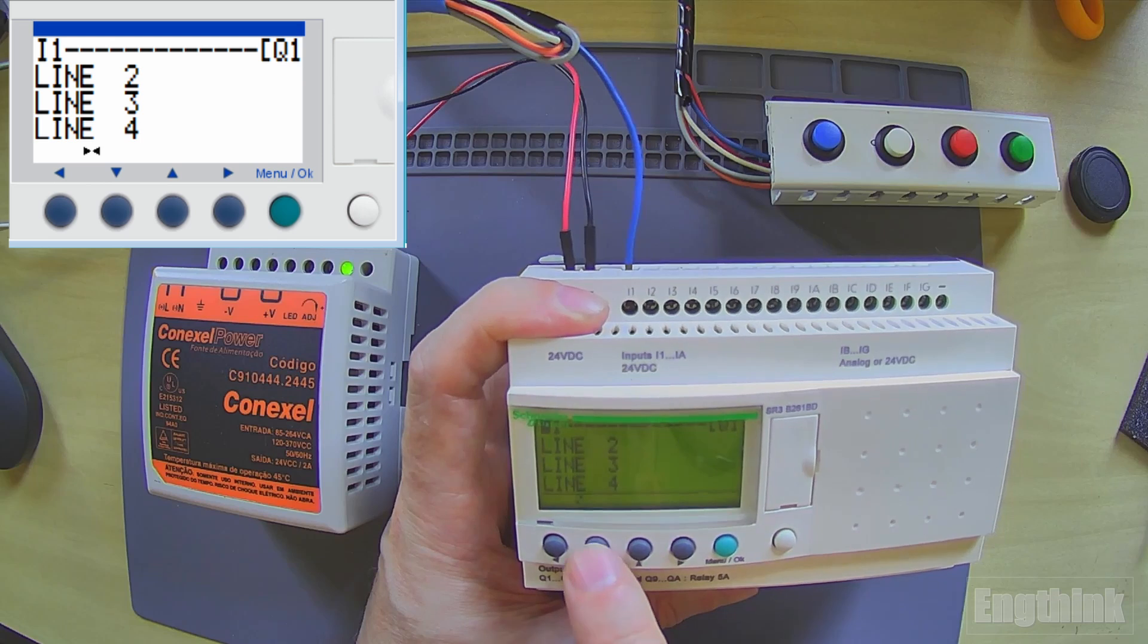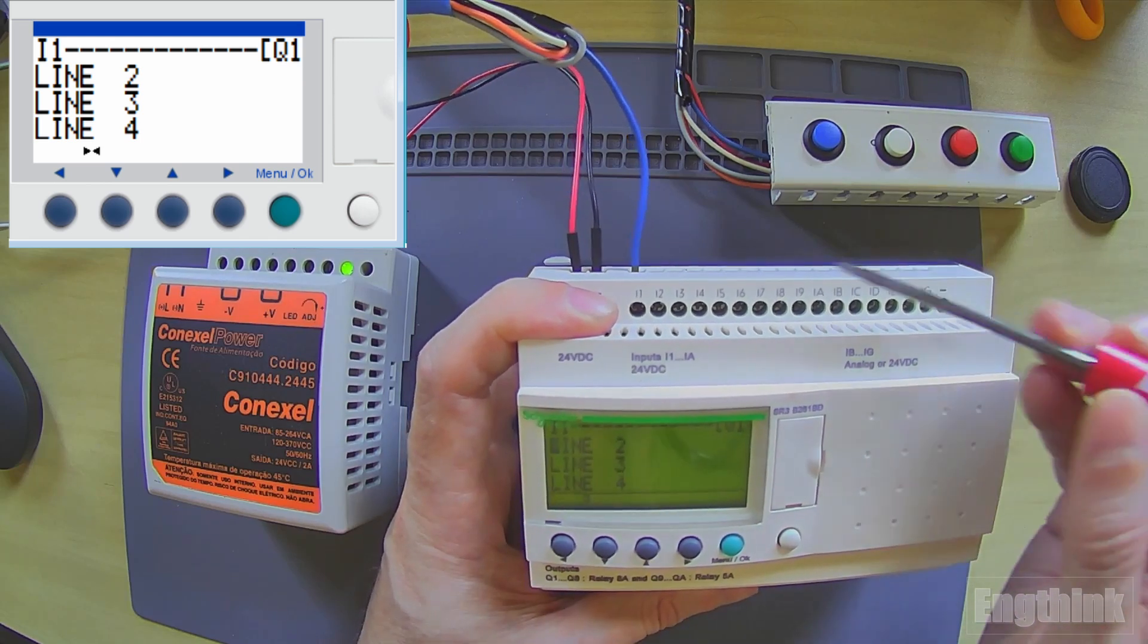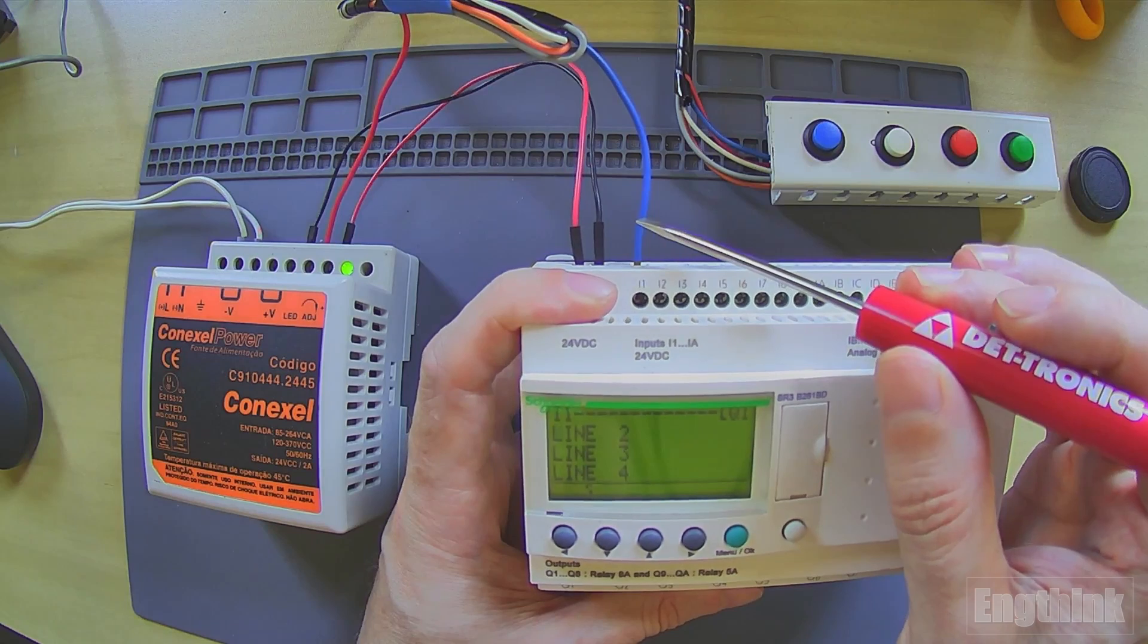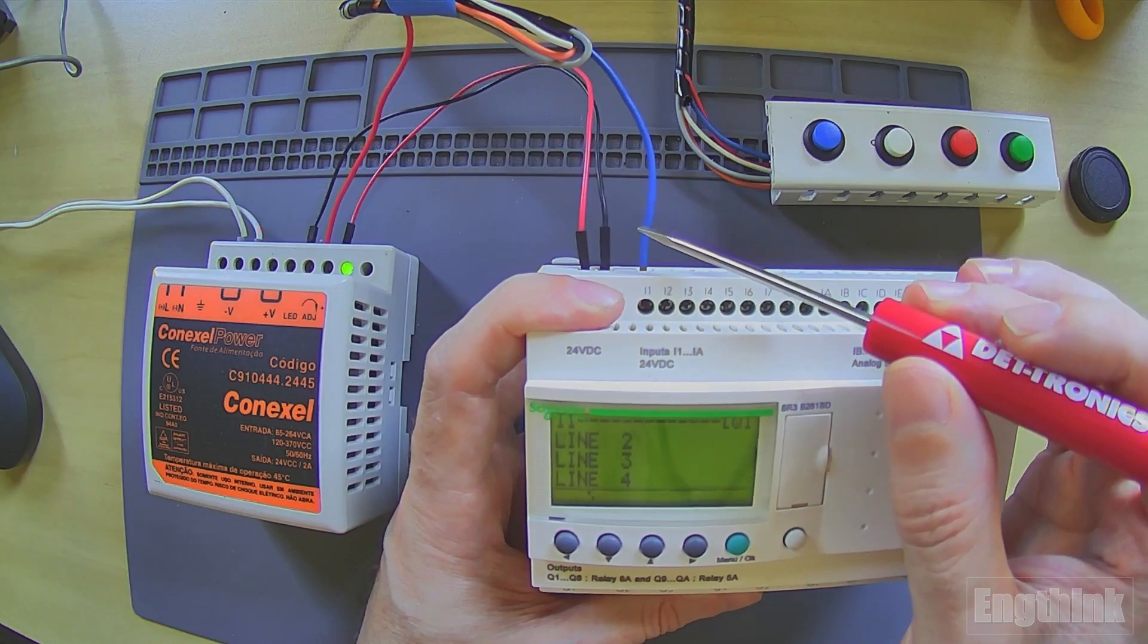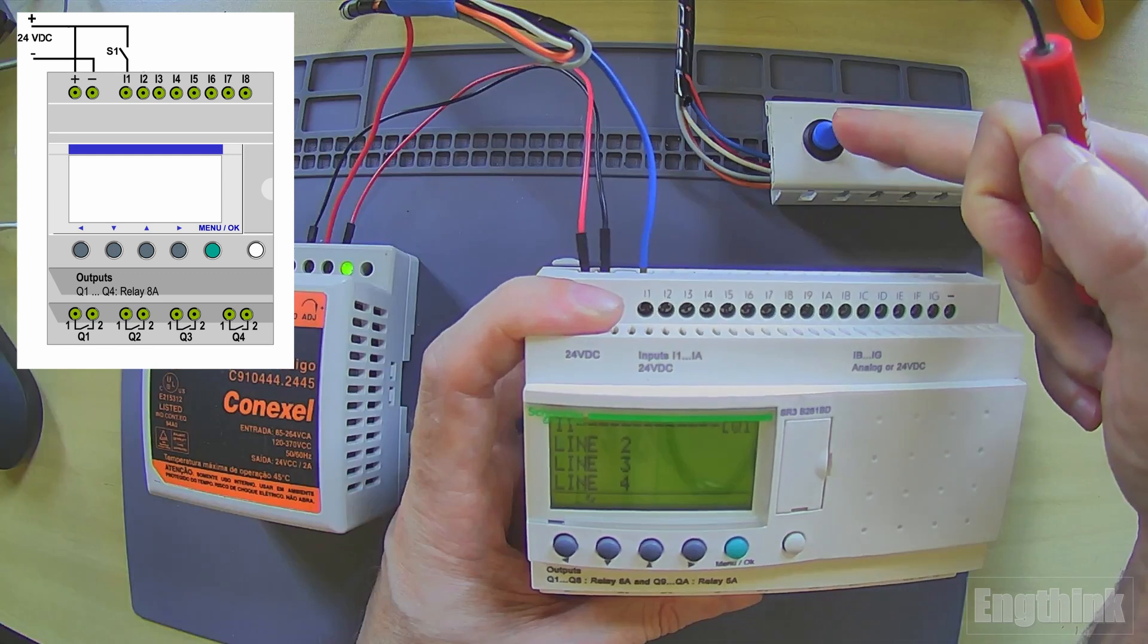As you can see, we have I1, which means the first digital input in our controller. This first digital input is connected to this blue button.